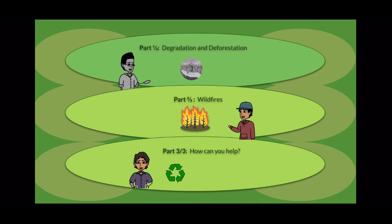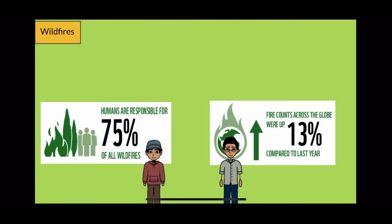Second segment, wildfires. Forests, savannas, grasslands, and tundras are all affected by wildfires.